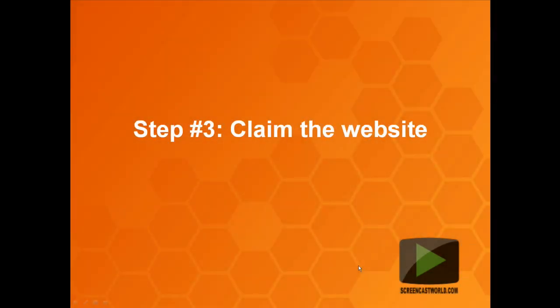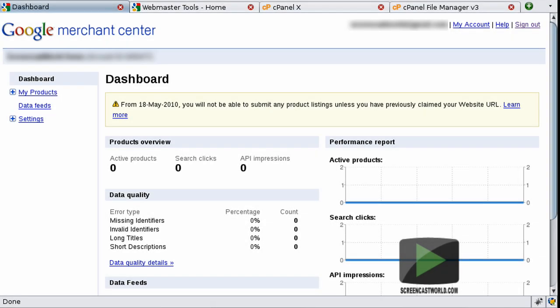Next I'm going to show you how to claim your website in the Google Merchant Center. Now that we've verified our website within Google Webmasters, we need to claim it within Google Merchant Center. Whilst more than one person can verify or be associated with the same URL within Google Webmasters, Google Merchant requires that only one account holds the right to upload and publish product listings. For this reason, you will need to claim your website URL in Google Merchant after you are verified in Google Webmasters.